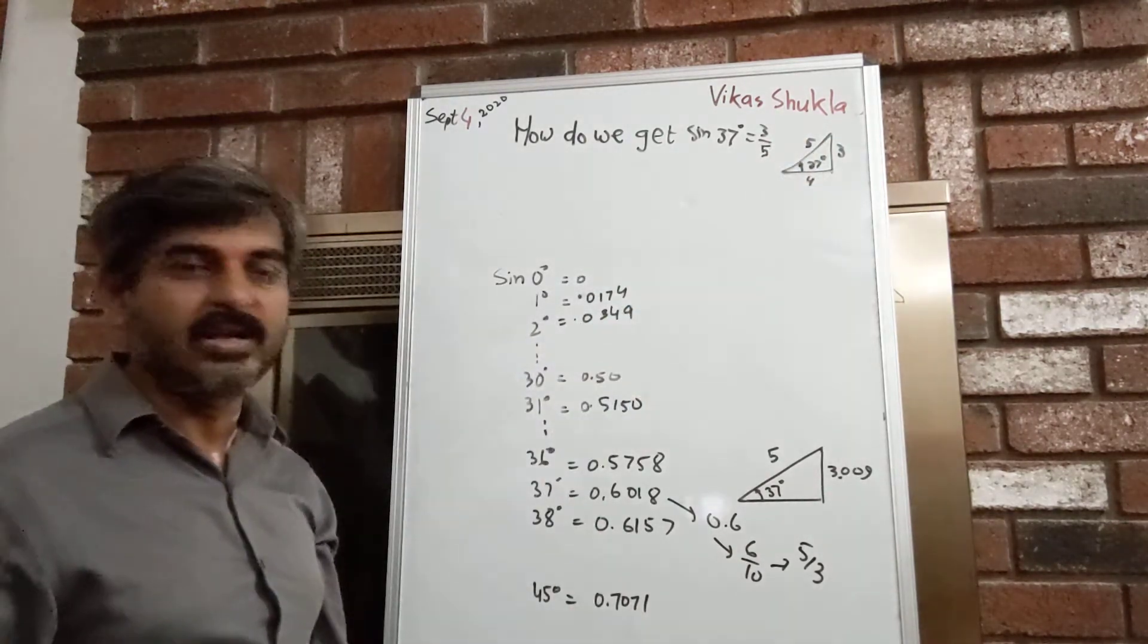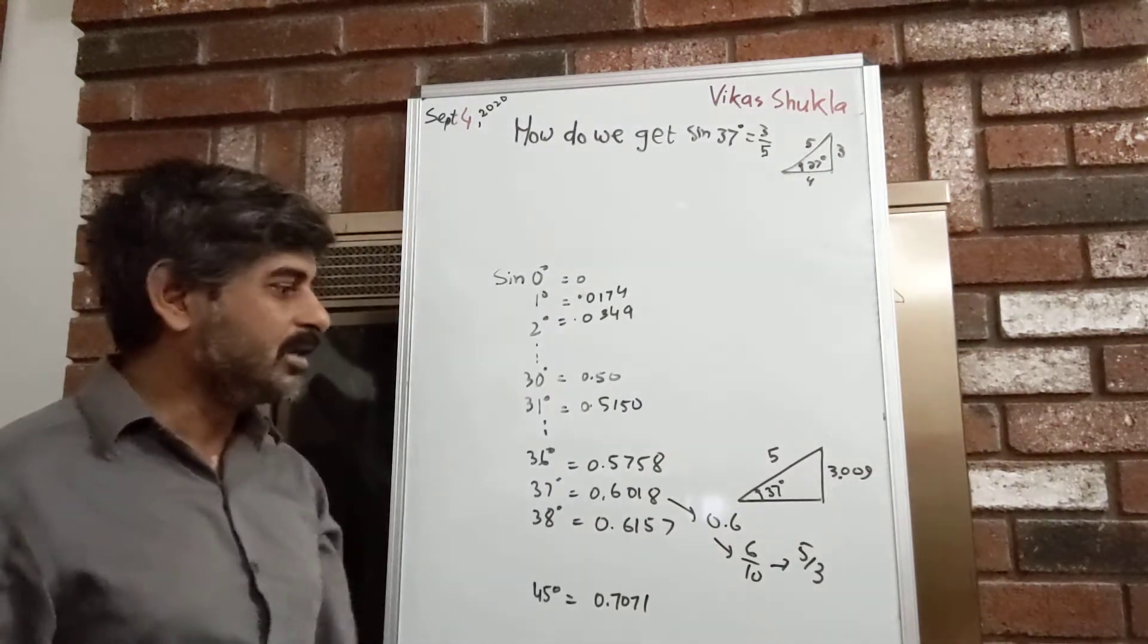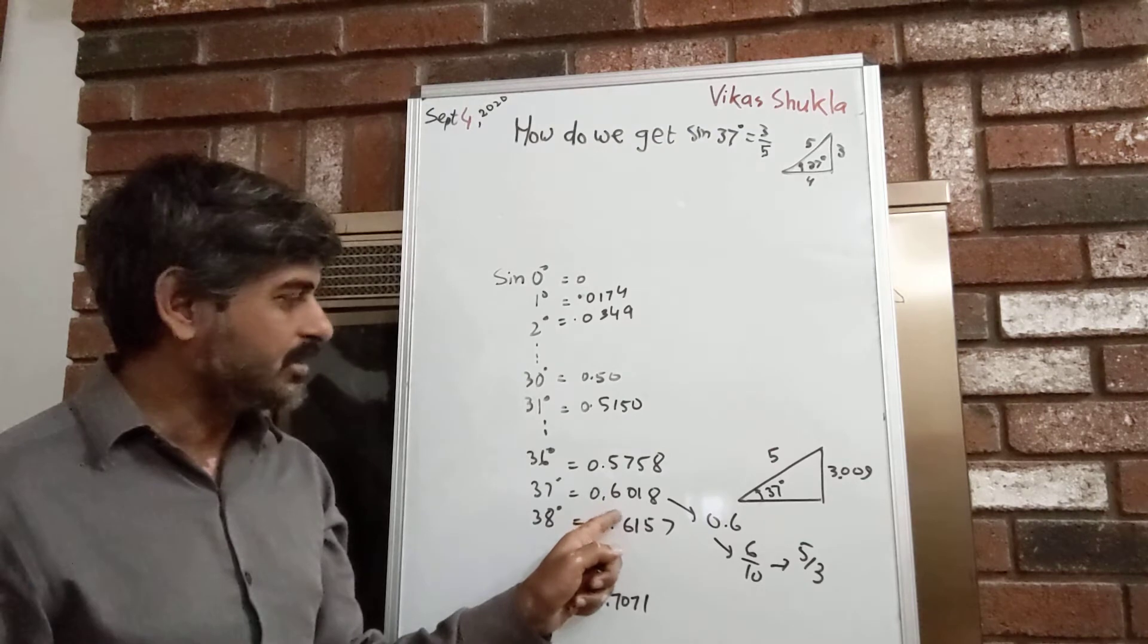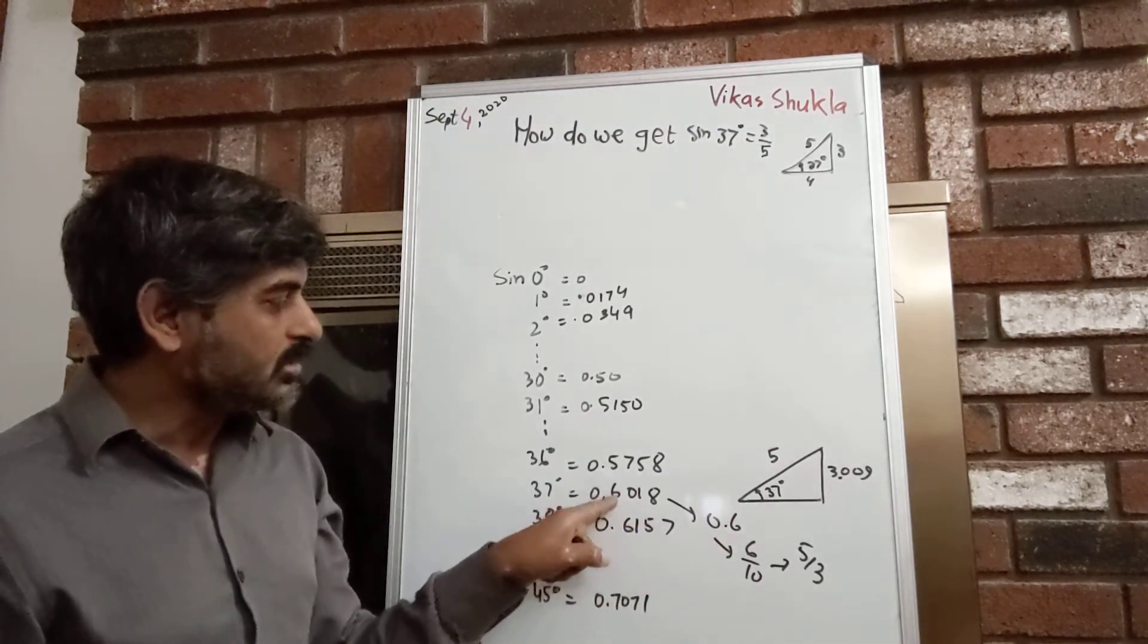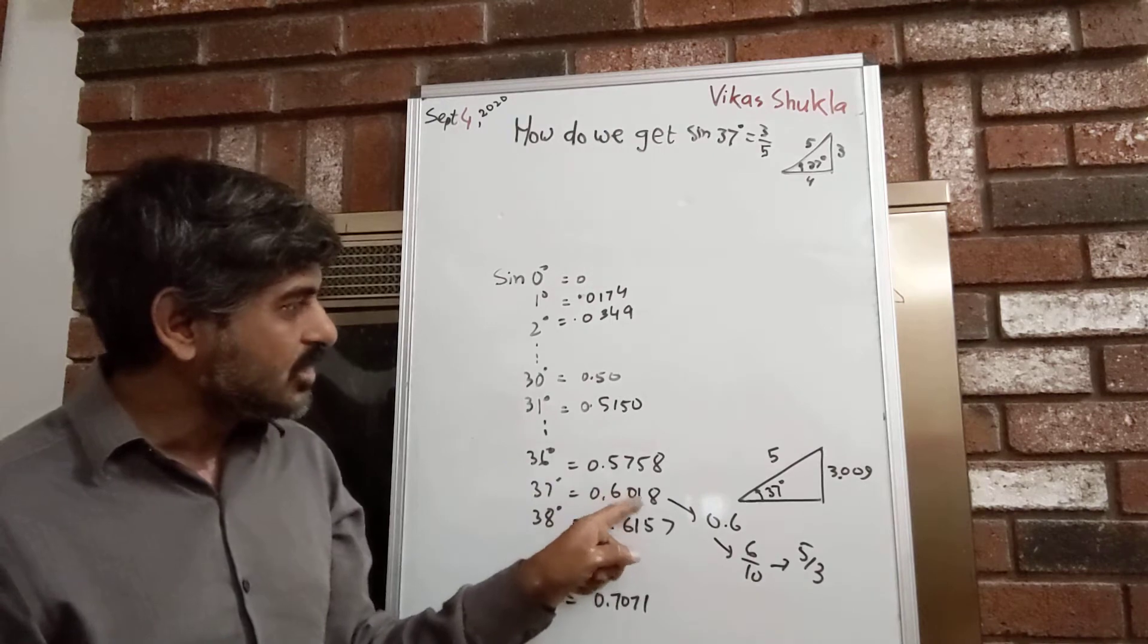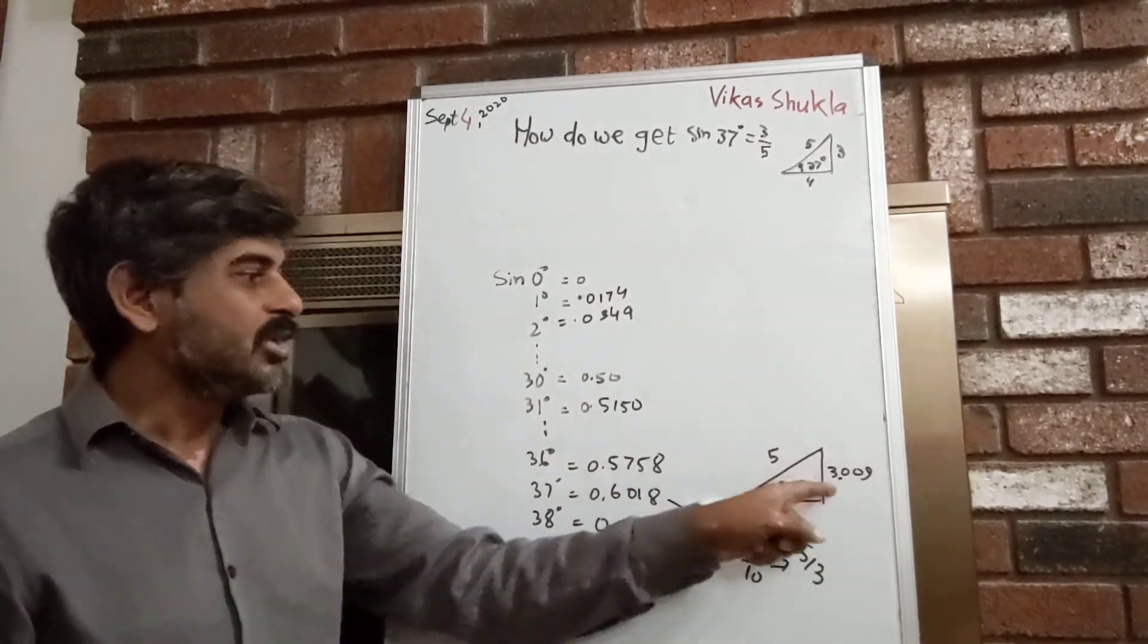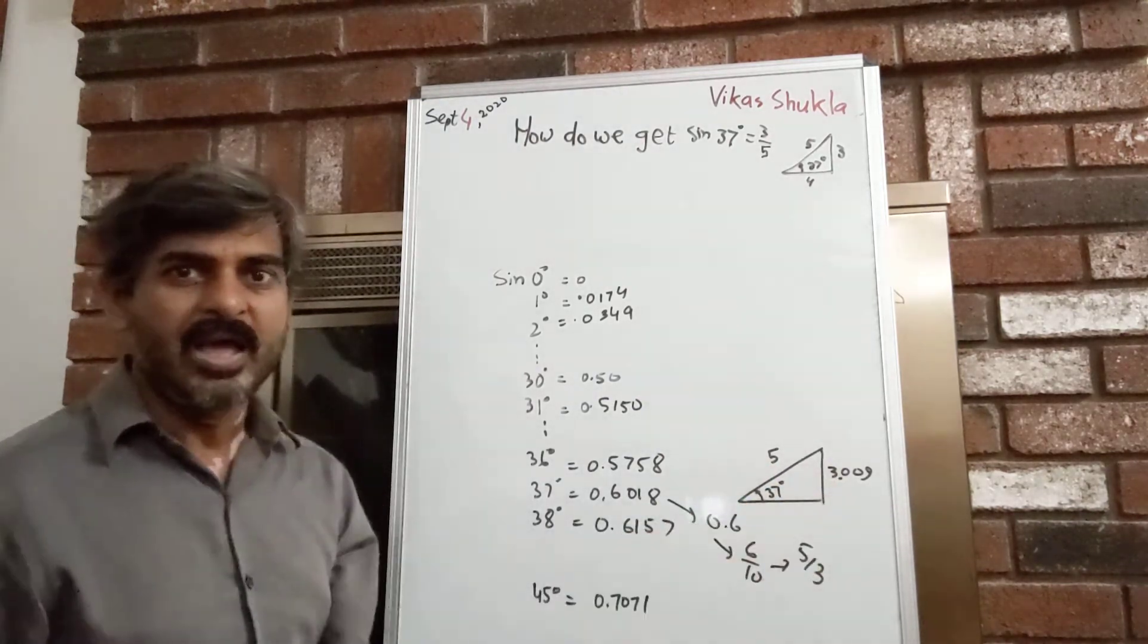It's accurate to a fairly good degree, because if instead of 0.6, you take 0.6018, then instead of 5 and 3, it would actually be 5 and 3.009. If you calculate it, you can see we're accurate at least to the first decimal digit, which is why we make this approximation.